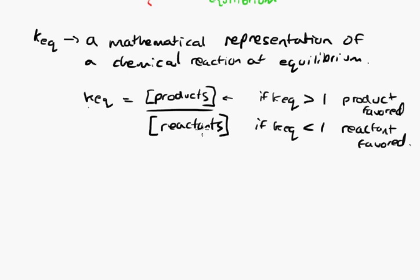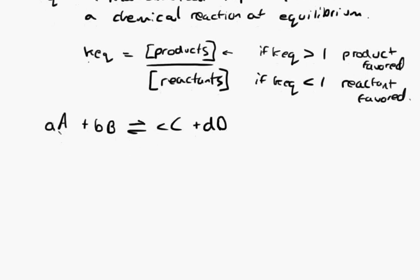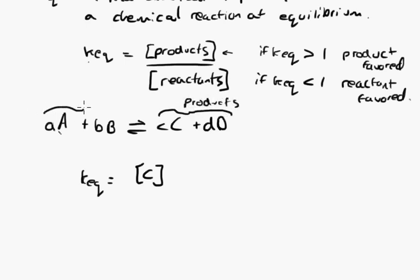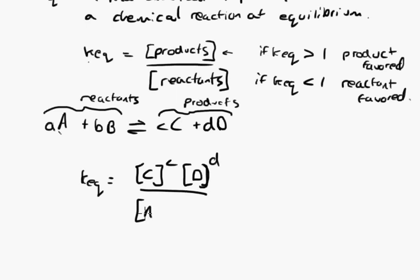In general, for any reaction at equilibrium — say aA + bB ⇌ cC + dD, where a, b, c, and d are the coefficients (molar ratios) — KEQ equals the concentration of C raised to the power c, times the concentration of D raised to the power d, divided by the concentration of A raised to the power a, times the concentration of B raised to the power b. That's the KEQ formula — it's important to memorize this for any chemistry course.